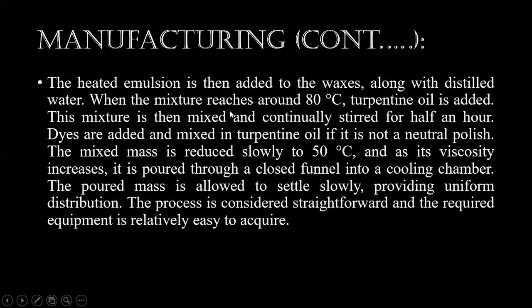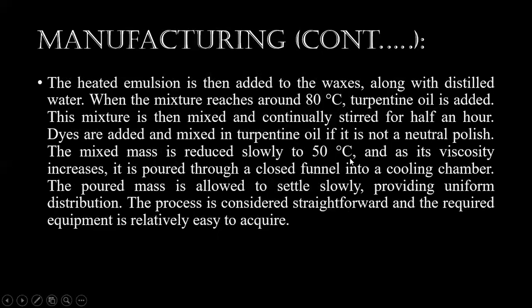When the mixture reaches around 80 degrees Celsius, turpentine oil is added. This mixture is then stirred continuously for half an hour. Dyes are added and mixed in turpentine oil if it is not a neutral polish — specific dyes are added for specific color polishes. The mixed mass is reduced slowly to 50 degrees Celsius, and as its viscosity increases, it is poured through a closed funnel into a cooling chamber. The poured mass is allowed to settle slowly, providing uniform distribution. The process is considered straightforward and the required equipment is relatively easy to acquire.